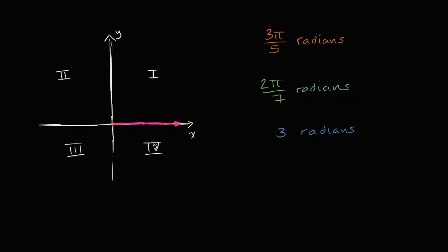What I want to do in this video is get some practice, or become familiar with what different angle measures in radians actually represent. We're going to start with a ray that starts at the origin and points along the positive x-axis — this magenta ray — and rotate it around the origin counterclockwise by different angle measures. We'll think about what quadrant we fall into when we rotate counterclockwise by three pi over five radians, two pi over seven radians, or three radians.